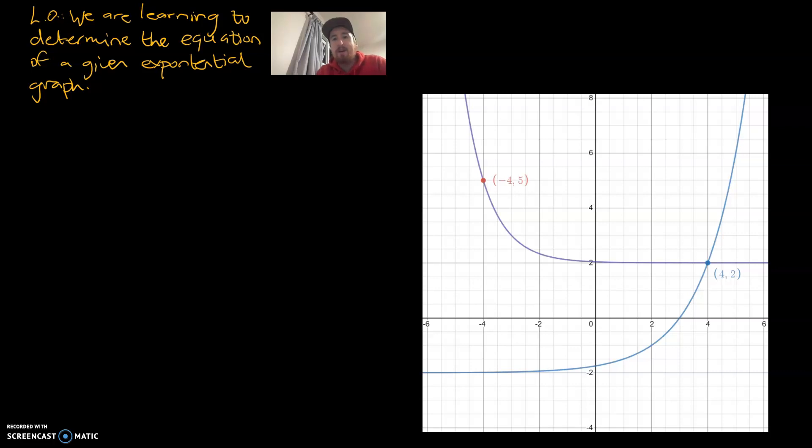Hey guys, Mr. Bowman here. Trying something new out that my year 9 class suggested is getting the webcam going. And I've also thought I'd wear the red Westlake hoodie for the first video. Today's learning objective is in yellow and we are learning to determine the equation of a given exponential graph.